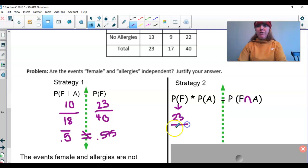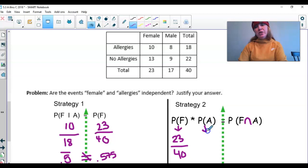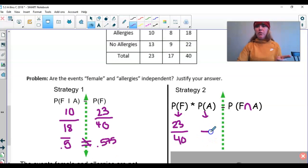Now, then we're going to figure out the probability of having allergies. Again, there's no conditions here. So it's always out of our grand total. So out of 40. Out of the 40, how many of them have allergies? And there's 18 of them.